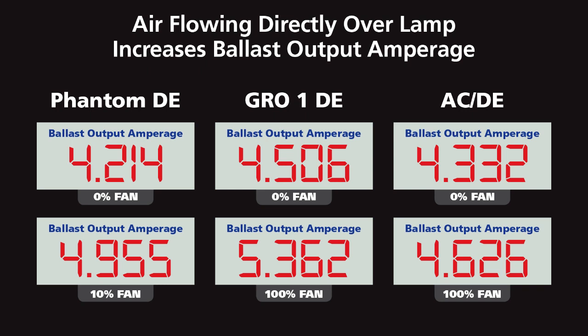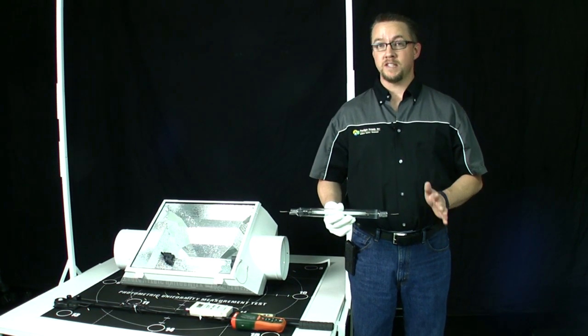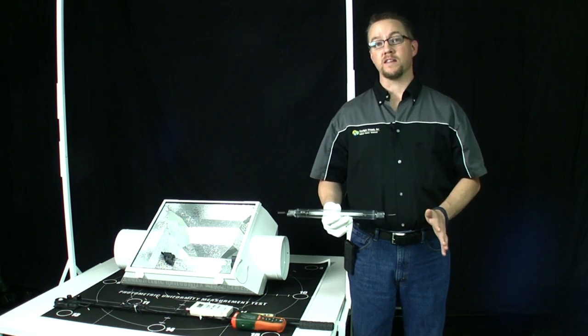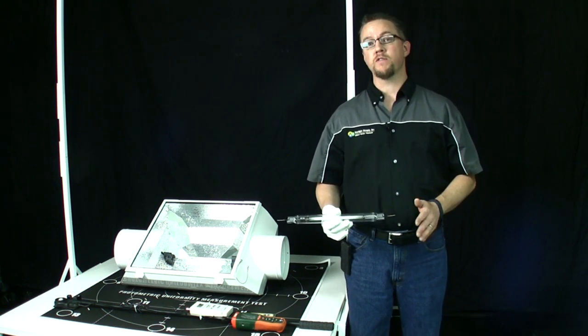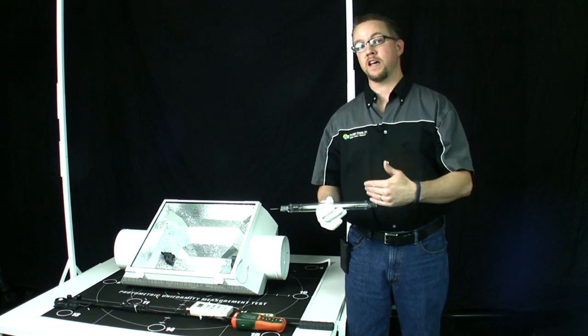We have seen temperature increases of up to 27 degrees Celsius, or approximately 80 degrees Fahrenheit. As with anything electronic-based, an increase in component temperature is taxing and will result in decreased ballast life. This continues a chain reaction as the increase in current to the lamp will also prematurely tax the lamp.